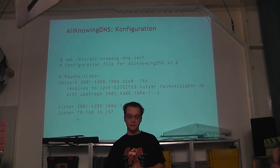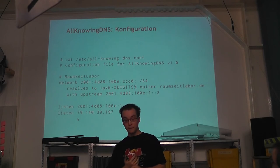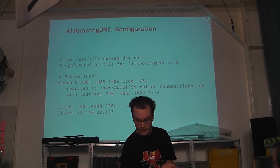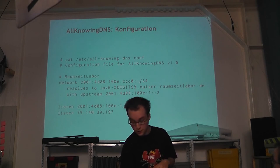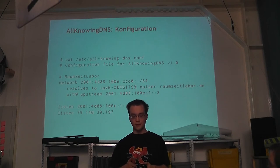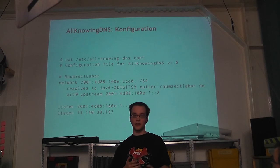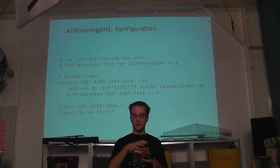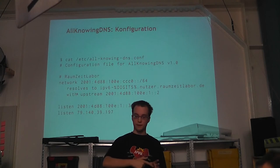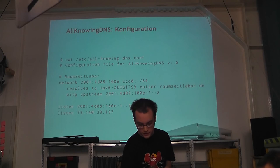What does the whole thing look like? Unlike a conventional DNS server, we have no zone file — instead we have a configuration file. There you specify: I have a network, you give the prefix (no need to reverse the bytes yourself), then you say 'results in ipv6-' and the digits at the end of the queried address are substituted in. Then it continues with .nutzer.raumzeitlabor.de. And the trick is that we also have the 'with upstream' directive, where you can specify another DNS server. What it does is: when a client sends a query with an IP address to the All-Knowing DNS, it first asks the upstream server, and if there's an answer it forwards it. If not, it generates a hostname. You also specify on which addresses the server should listen.